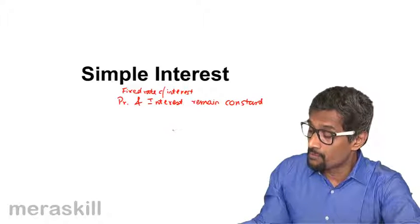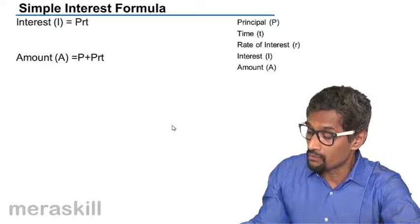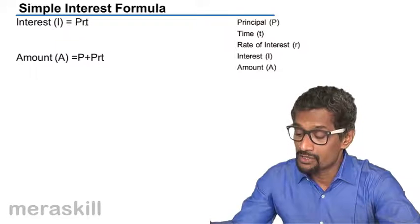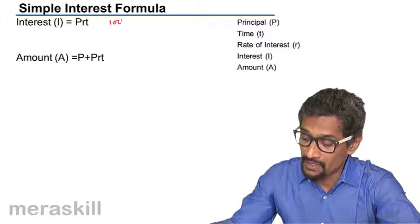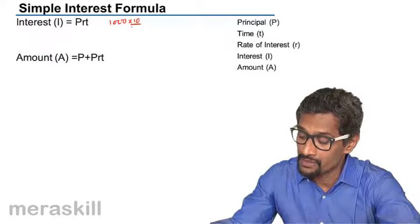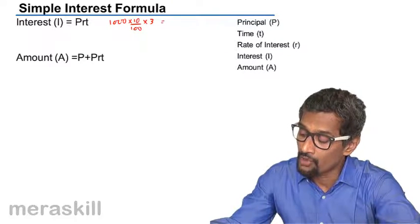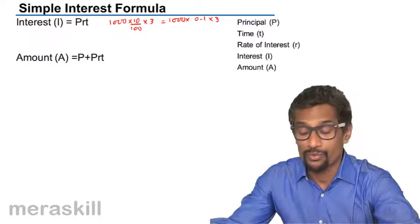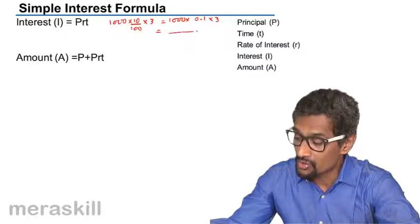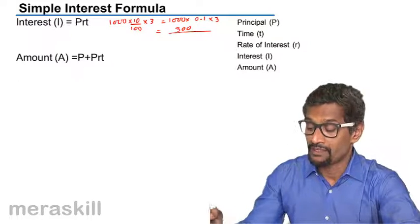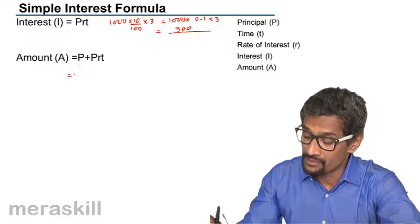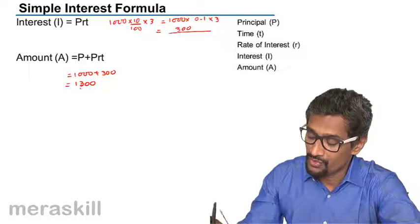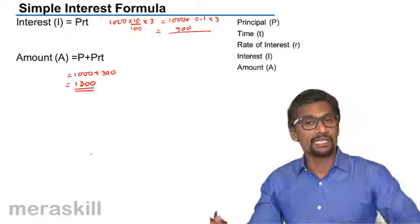The most important thing is the interest formula, which is I = PRT — principal times rate times time. For example, suppose the principal is 1000, R is 10% (or 0.1 in decimal), and the period is 3 years. The interest is 1000 × 0.1 × 3 = 300, and the amount is principal plus interest, which is 1000 + 300 = 1300.